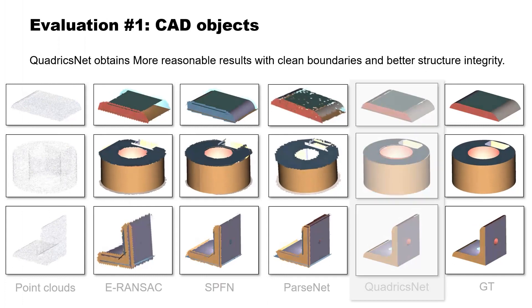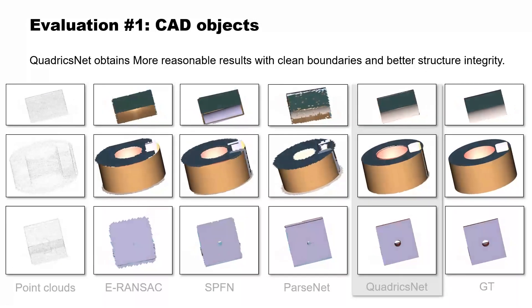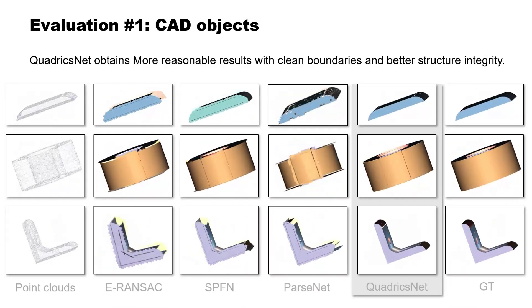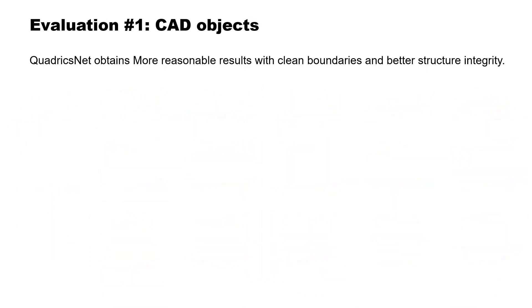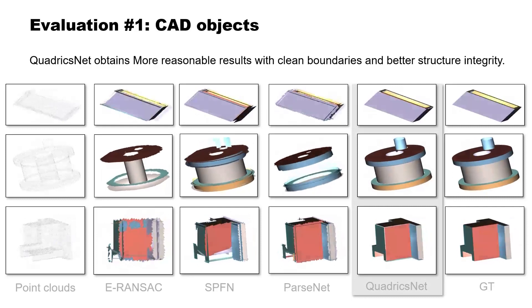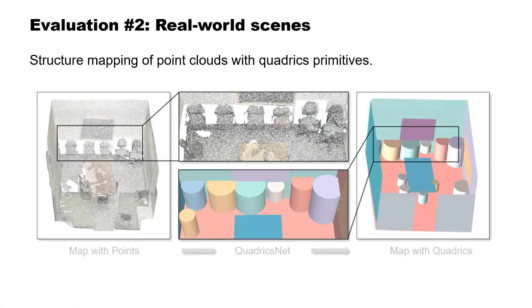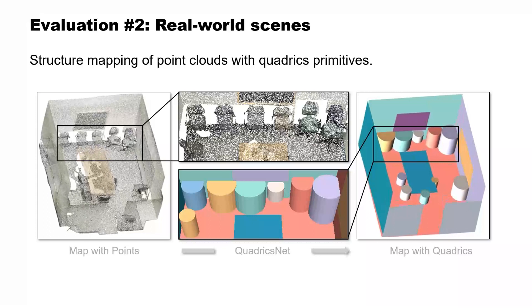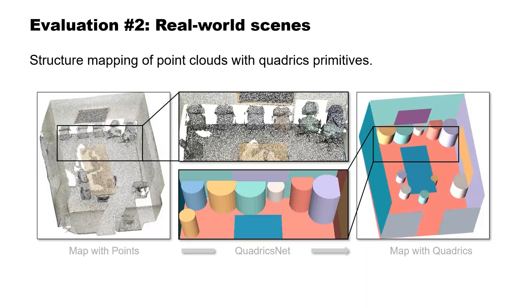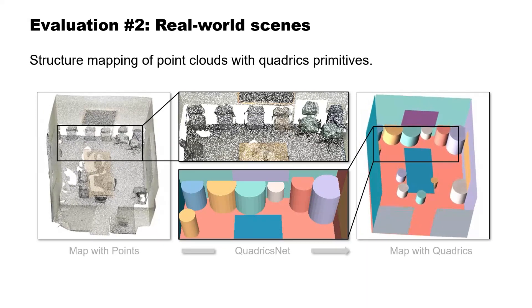Evaluation 1 — CAD objects. The evaluation on CAD objects shows that QuadricsNet produces more reasonable results with clean boundaries and better structural integrity than other state-of-the-art methods. Evaluation 2 — real-world scenes. Furthermore, QuadricsNet effectively represents real scenes with quadrics and yields robust structure mapping results.